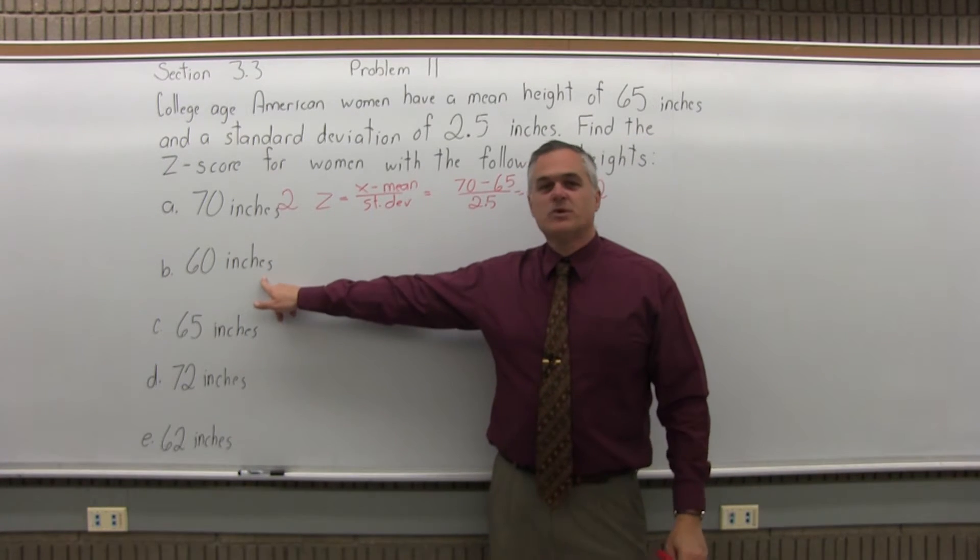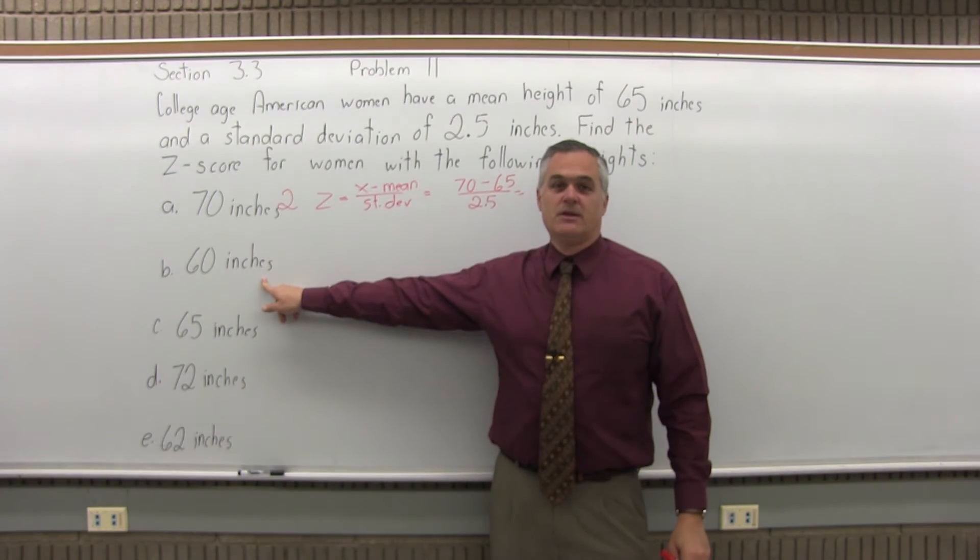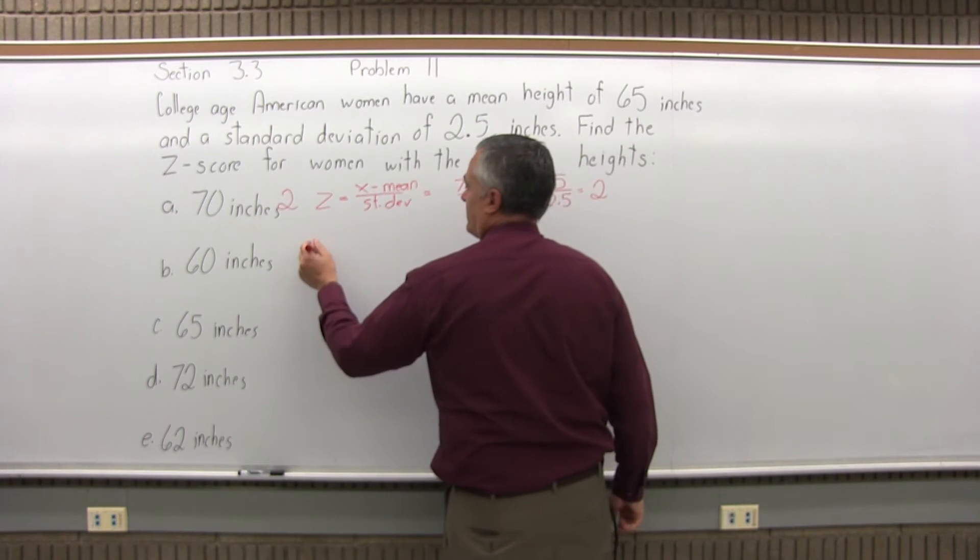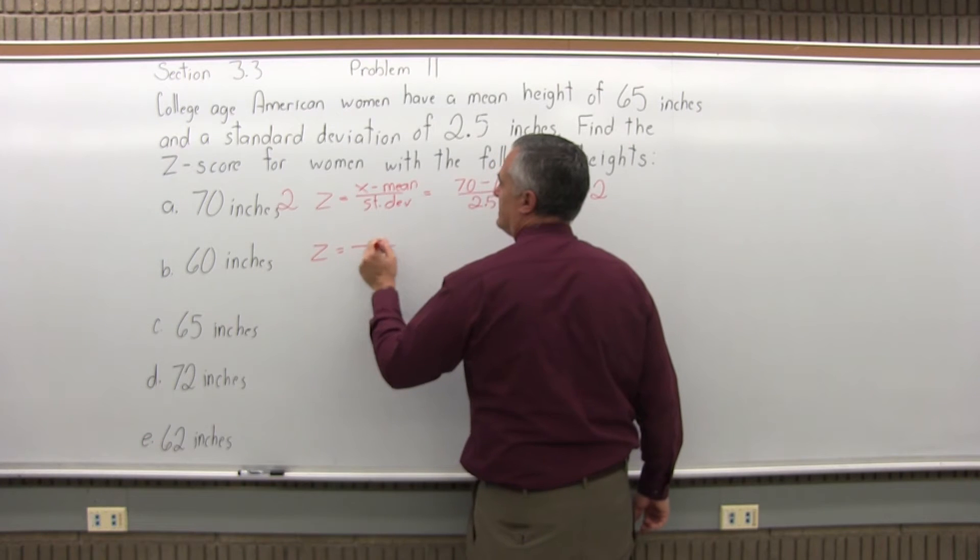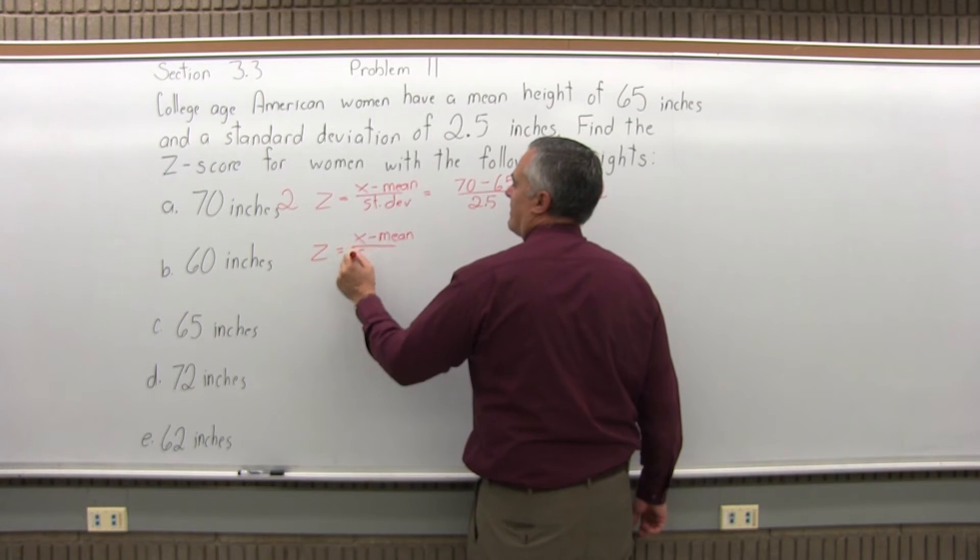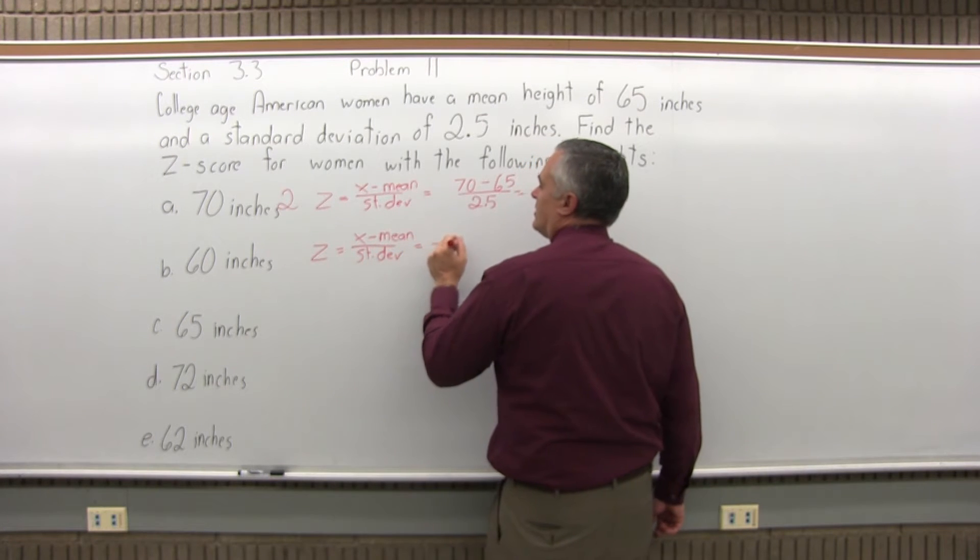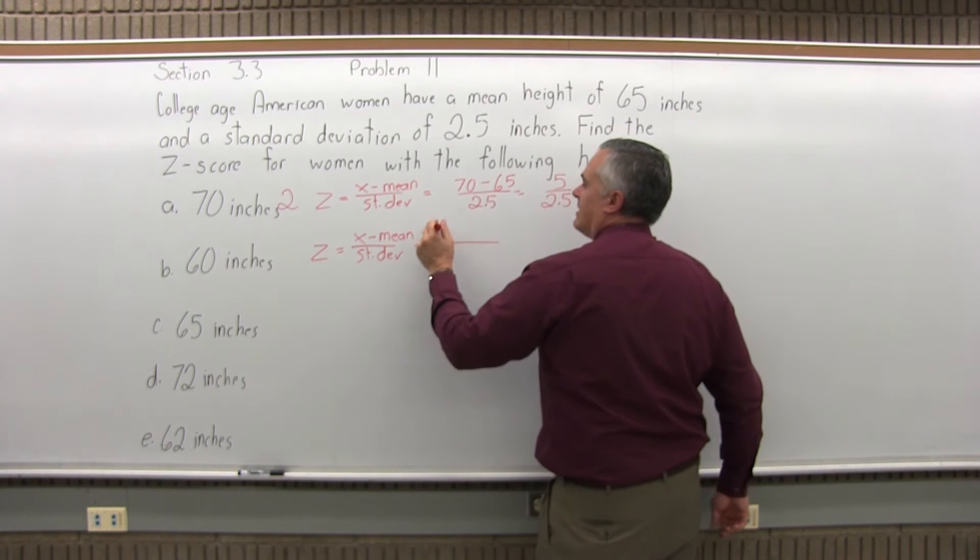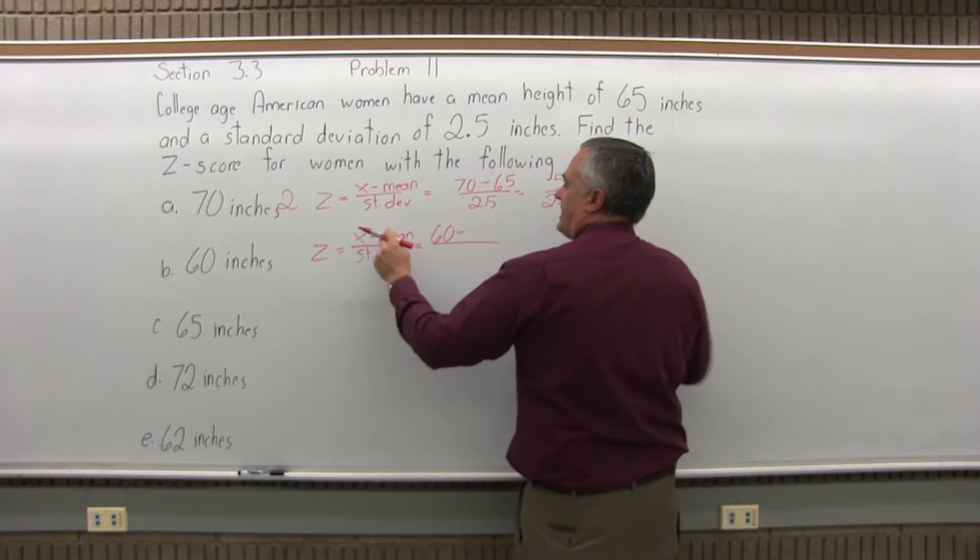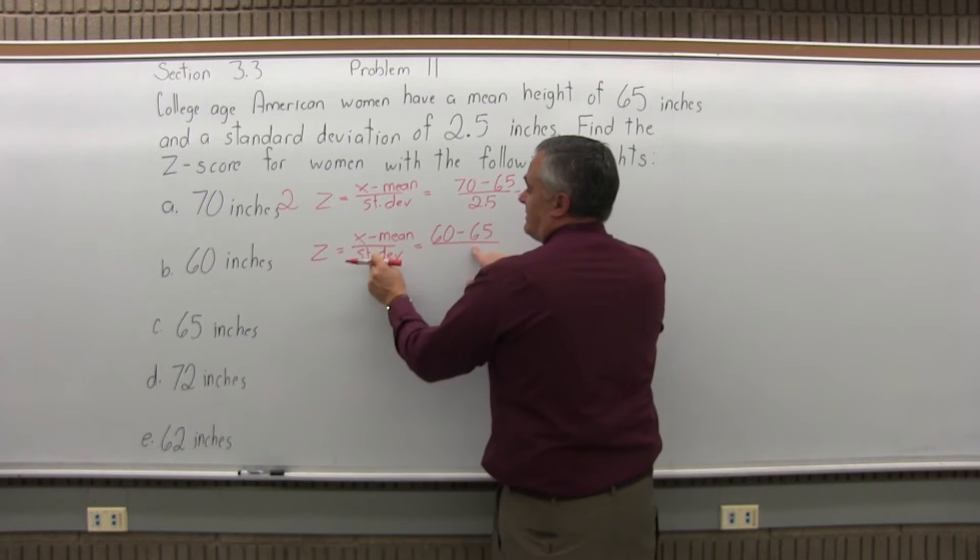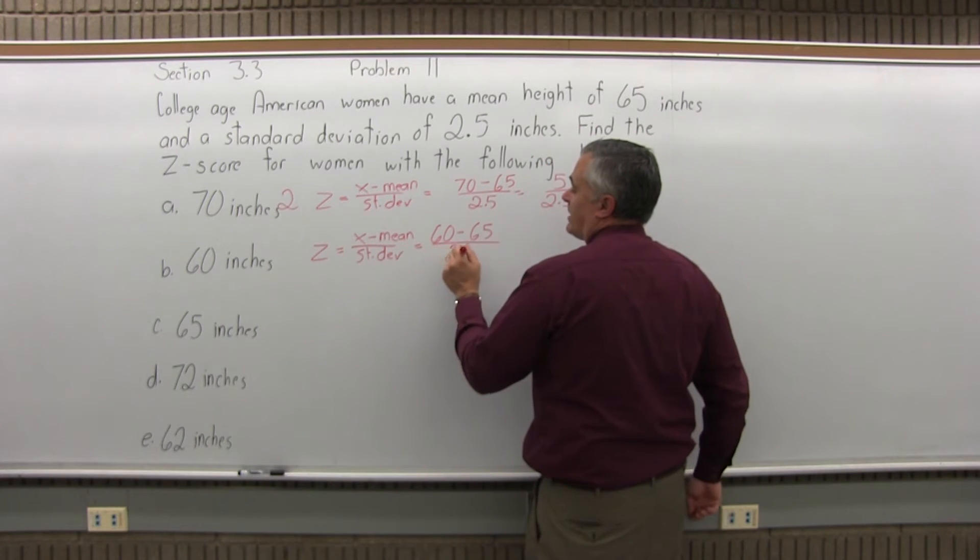Part b, how about a woman who's 60 inches tall? That's 5 foot even. Same formula. z equals x minus the mean divided by the standard deviation. The value of x is 60, minus the mean is still 65, the average height. The standard deviation is still 2.5, or 2.5 inches.